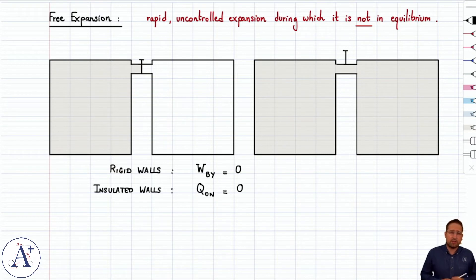Heat can't come in from the surroundings and it can't leave the gas to the surroundings because the walls of the containers are insulated.